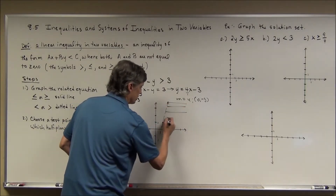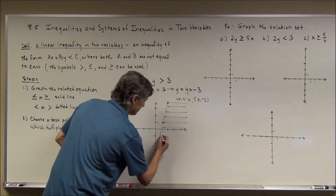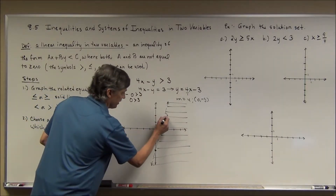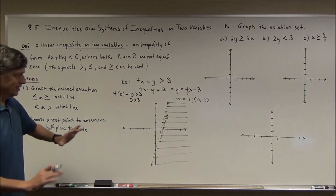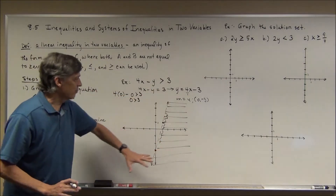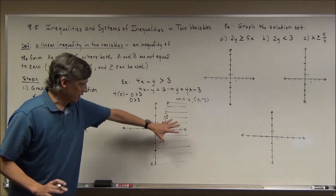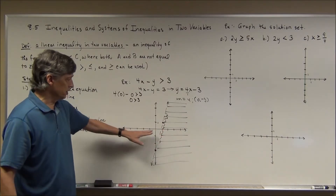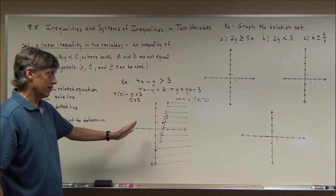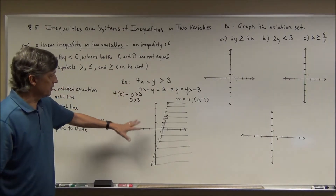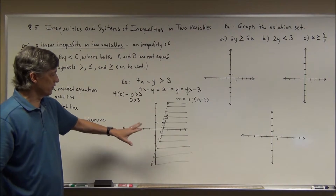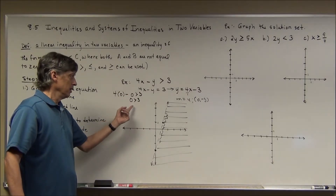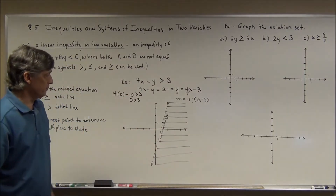I'll verify: take a point like (4, 0) in the other half plane, plug it in, and you get a true statement. So I shade the lower-right half plane. Try to draw parallel lines to represent the shading — don't just mark one side. That doesn't represent the entire half plane when someone is grading it. If the test point makes it true, shade that side. If false, shade the opposite side.